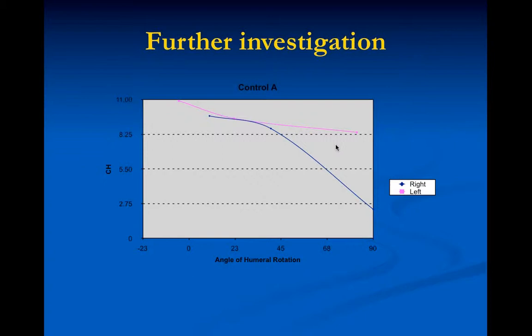This is one control individual - myself. On my left side versus my right side, it turned out that in internal rotation at 90 degrees, I actually had less than three millimeters separation between the lesser tuberosity and the coracoid process on the right side. The reason is that on my right side I have a rotator cuff tear with a little bit of superior migration of the humeral head, whereas on the left side I do not.